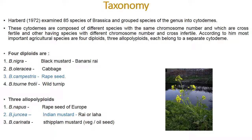Coming to taxonomy: Herbert in 1972 examined 85 species of Brassica and grouped them into cytodemes. These cytodemes are composed of different species with the same chromosome number that are cross-fertile, and others with different chromosome numbers that are cross-infertile. According to him, the most important agricultural species are 4 diploid and 3 allopolyploid, each belonging to separate cytodemes. The 4 diploid species include Brassica nigra — black mustard or Banarasi rai.